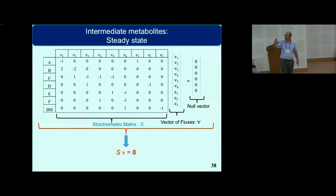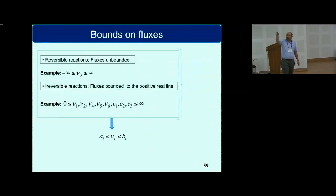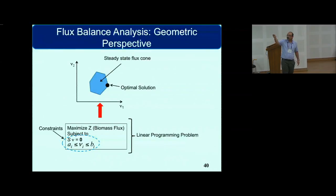Then you can put special bounds on the fluxes of reactions. If it's reversible, it's bounded between negative to positive infinity. It can take any value on the real line. If it is irreversible, it proceeds only in the forward direction. Finally, we land up in this picture. Here I have the FBA formulation. You maximize the biomass flux subject to the mass balance constraints, which say the intermediate metabolites are steady state, and then bounds on the flux values. This particular domain is the feasible domain, and this is your optimal solution.